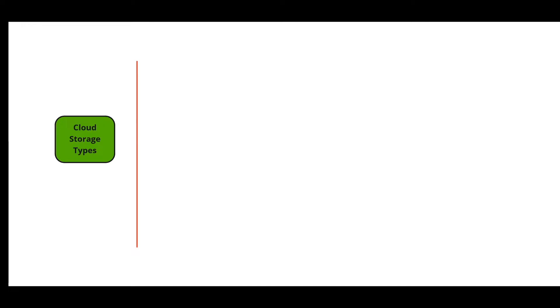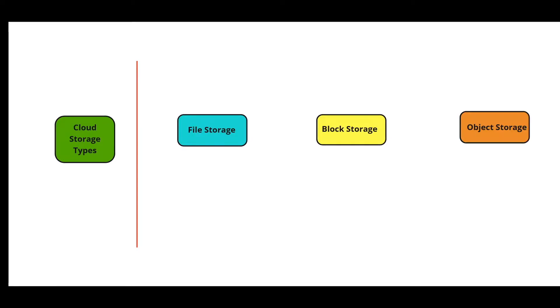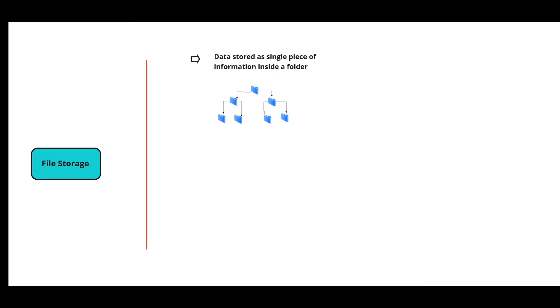Let's look at cloud storage types. Primarily there are three storage solutions provided by cloud providers: file storage, block storage, and object storage. In file storage, storage is presented as a file system that is optimized for serving files with a large number of network connections.